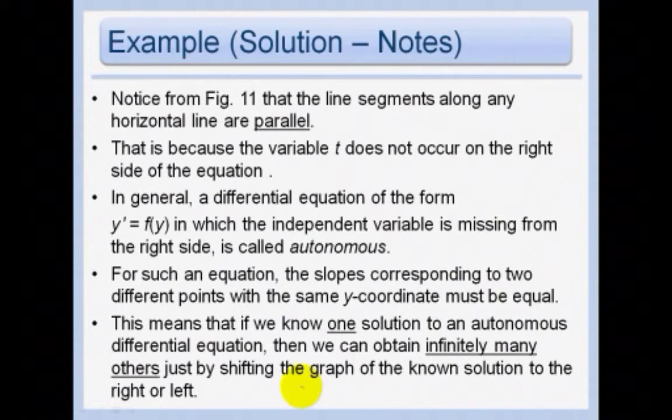Notice from figure 11 that the line segments along any horizontal line are parallel. And that is because the variable T does not occur on the right hand side of the equation. In general, a differential equation of the form Y prime equals F of Y, meaning that the derivative is dependent only on the Y value. The independent variable is missing. I didn't say F of X comma Y. I just said F of Y. It only depends on Y. That is called autonomous. And you should know that word. For such an equation, the slopes corresponding to two different points with the same Y coordinates must be equal. In fact, if the Y coordinate is the same, no matter what the X is, all those slopes are exactly the same. They're parallel. This means that if we know one solution to any autonomous differential equation, then we can obtain infinitely many others just by shifting the graph of the known solution to the right or the left, which is what we just saw in the last slide.